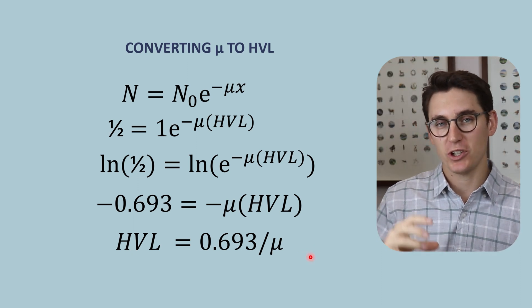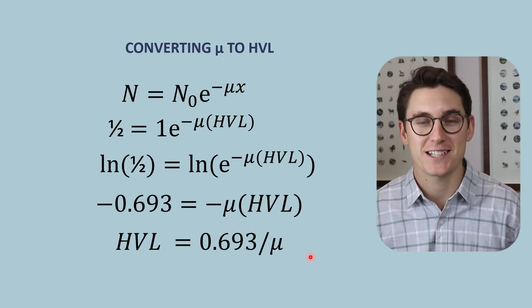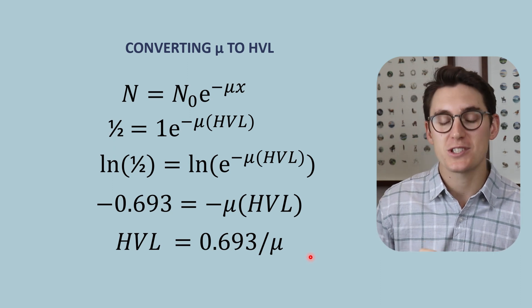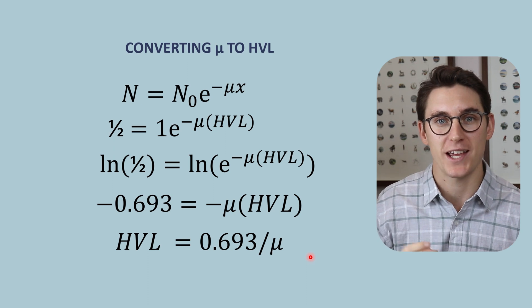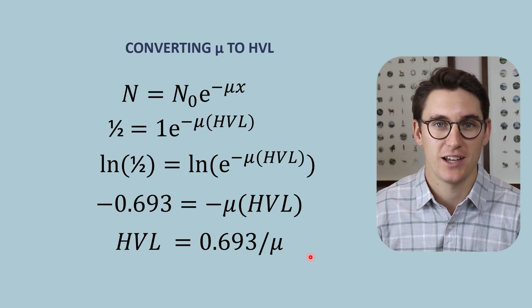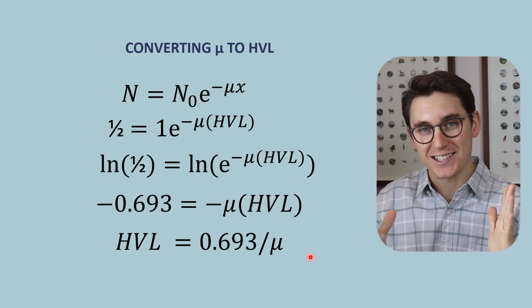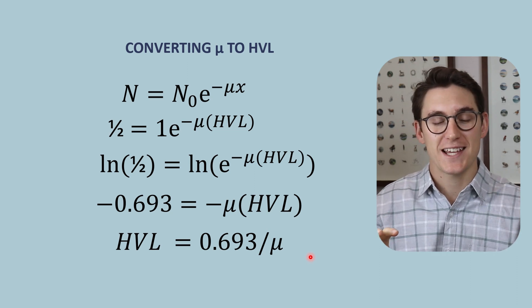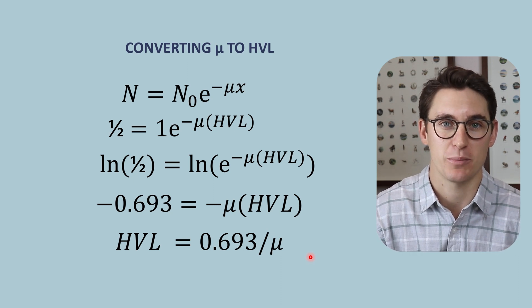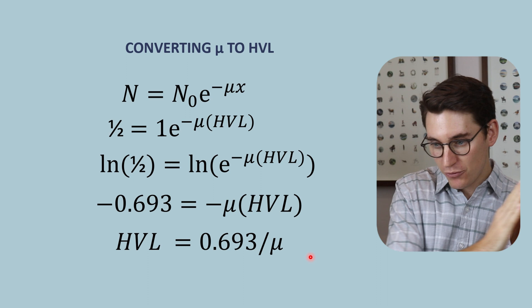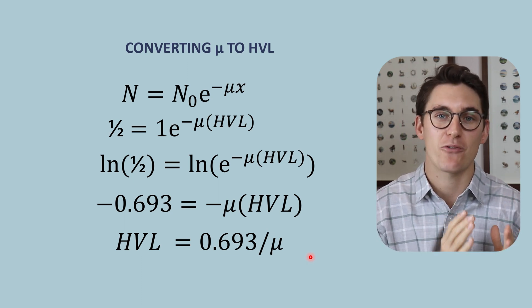So what have we actually calculated? We can use the linear attenuation coefficient as a good proxy for how specific tissues remove x-rays from a beam — bone, being more dense than water, removes proportionally more x-rays. The half value layer is a distance: how far x-rays must travel for their intensity to be halved. We can use the half value layer as a proxy for x-ray beam quality — the average energy of the beam. The higher the average energy, the further x-rays travel before intensity is halved, so as HVL increases, so does beam quality.